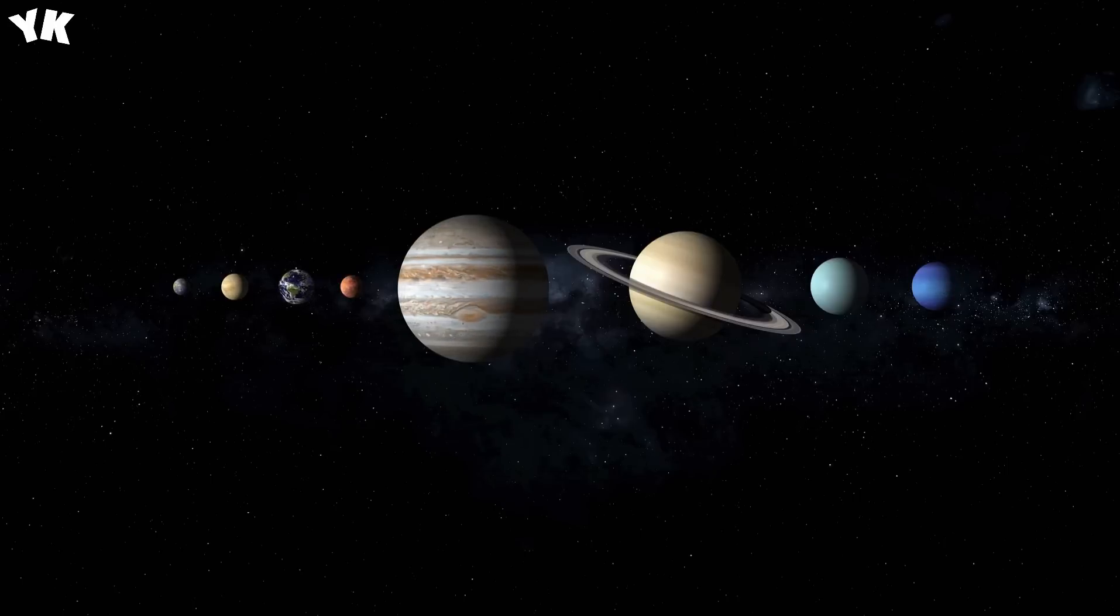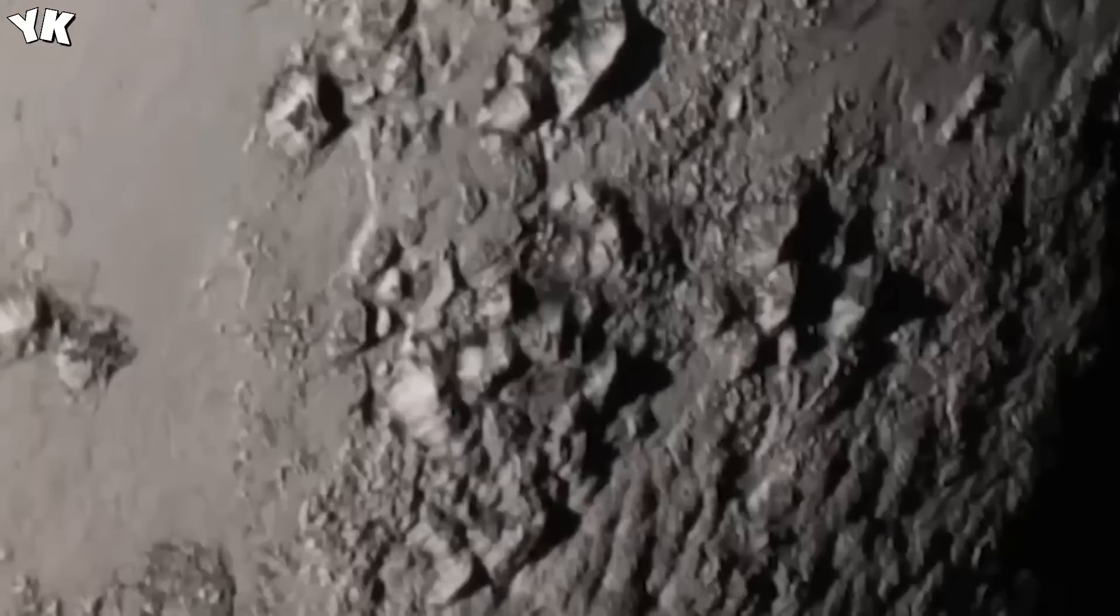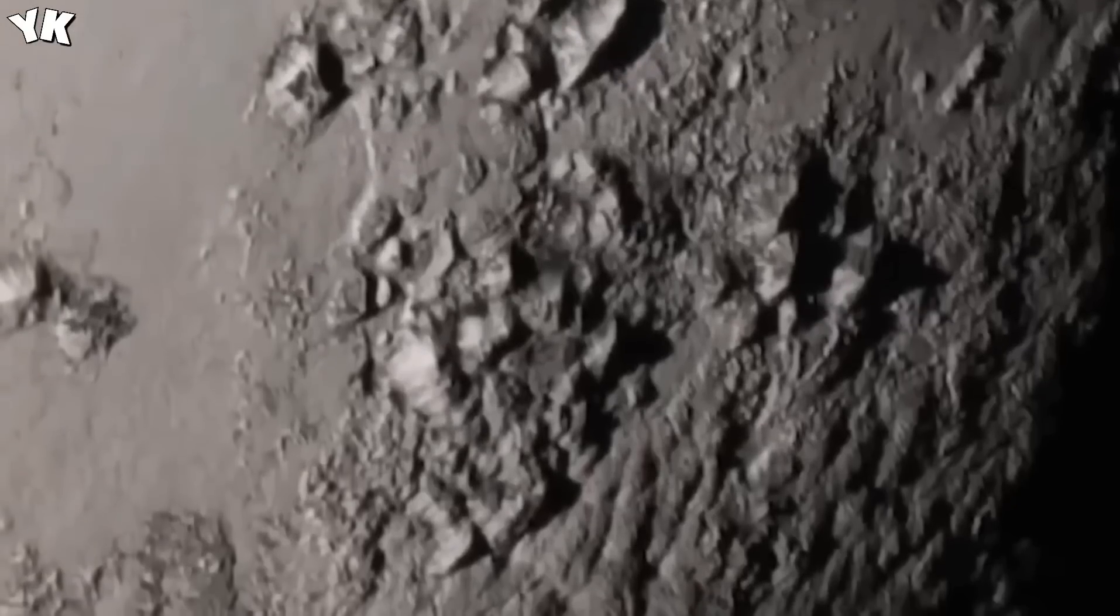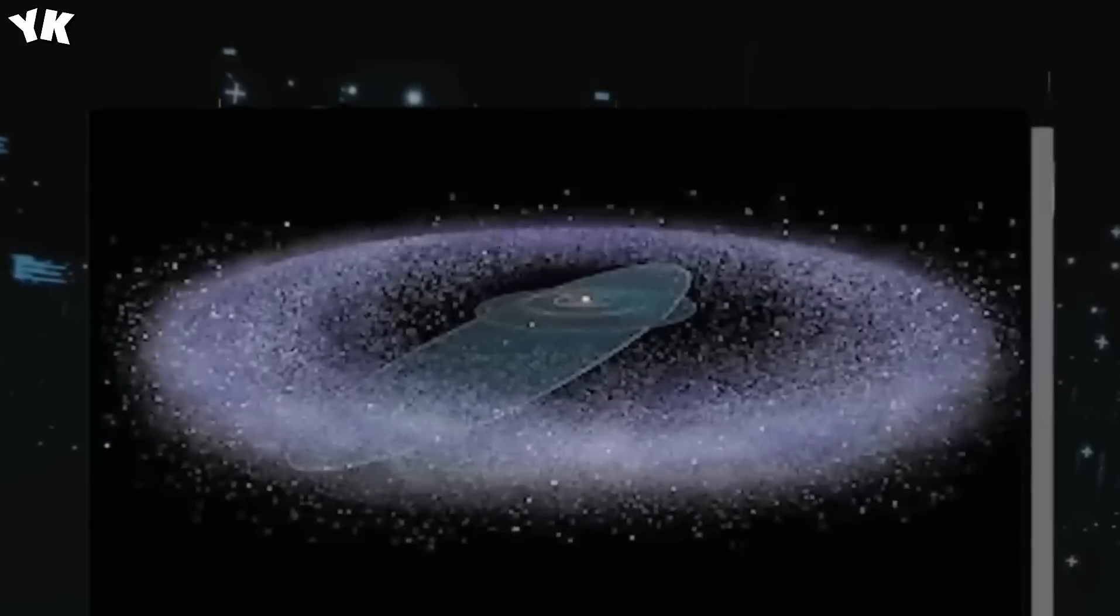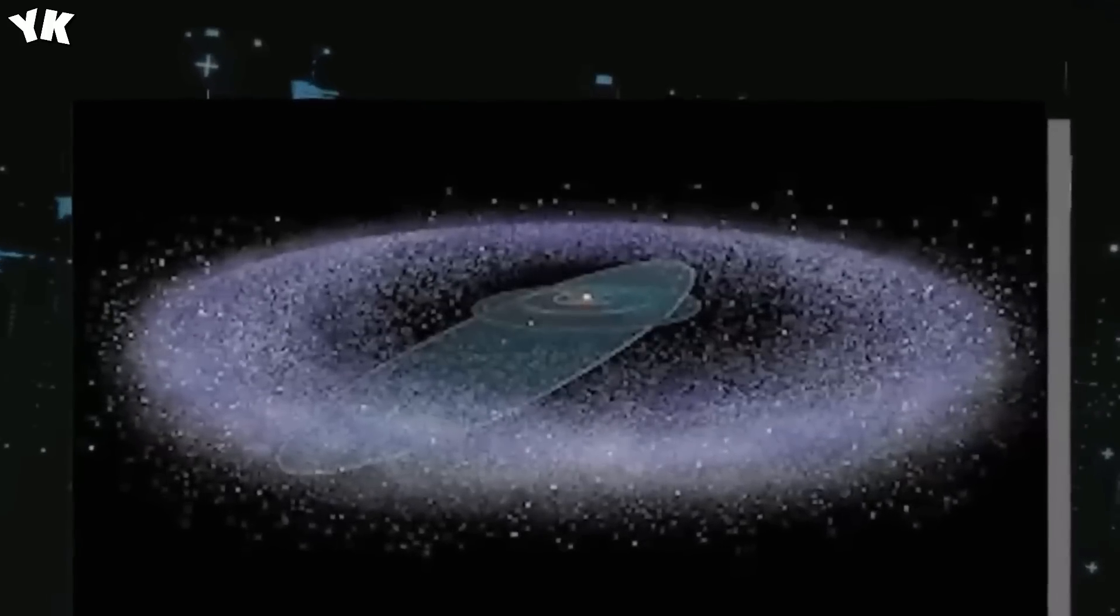Despite this inherent chaos, Pluto's orbit remains stable for an exceptionally long time, extending over billions of years. This suggests that beneath its seemingly erratic appearance, Pluto's journey around the Sun follows a structured order.